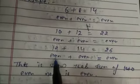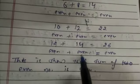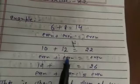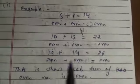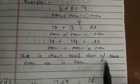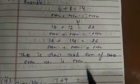Similarly, 10 plus 12 equals 22 — 10 is even, 12 is even, and 22 is also even. Next, 12 plus 14 equals 26 — 12 is even, 14 is even, and 26 is even. So when you add an even number to an even number, the result is always even. This shows that the sum of two even numbers is an even number.